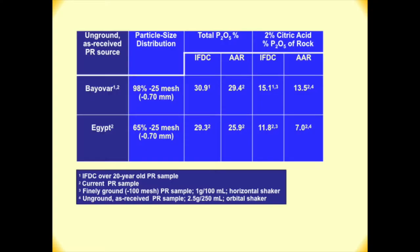Comparing IFDC and AAR measurements: sample one is my 20-year-old Biova phosphate rock from IFDC; sample two is the current Biova rock used by AAR. For total P2O5, they are more or less the same — 30.9 versus 29.4 — showing Biova phosphate rock is fairly uniform over 20 years. For 2% citric acid solubility, I measured 15.1 and AAR measured 13.5 — close but not identical, partly due to different apparatus and procedures used.